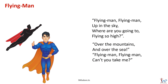In the poem, a child sees a flying man up in the sky and asks, where are you going? Then the flying man answers saying, over the mountains and over the sea. Then the child asks, why can't you take me with you? I am sure all of you like to fly with the flying man.